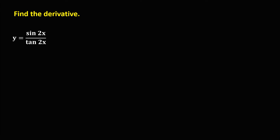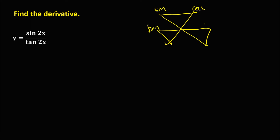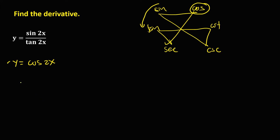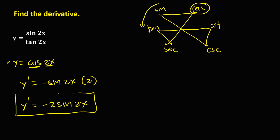For the next given, we have an identity for sine over tangent. From the figure — sine, cosine, tangent, cotangent, secant, cosecant — the ratio of two consecutive functions gives the previous function. So sine over tangent equals cosine. Therefore y equals cosine 2x. The derivative of cosine is negative sine, times the derivative of 2x which is 2. So y prime equals negative 2 sine 2x.